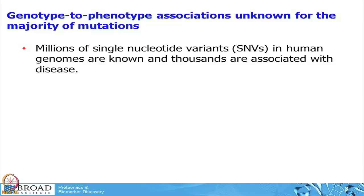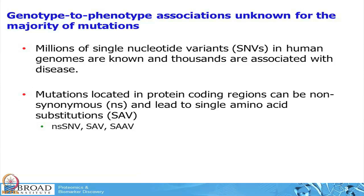As just presented, there are millions of single nucleotide variants known in the human genome and many of them are associated with certain human diseases, but for most of them we do not know the exact molecular mechanism that causes this genotype-to-phenotype association. As we learned during Kelly's and David's talk, mutations located in protein regions can be non-synonymous, meaning they can lead to a single amino acid substitution.